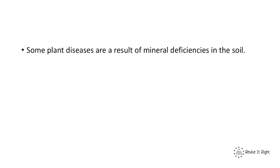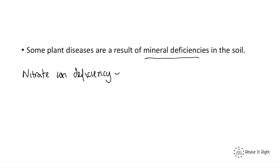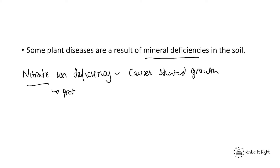Some plant diseases are also a result of mineral ion deficiencies in the soil that surrounds the plant. The first one is a nitrate ion deficiency — this is when the plant does not get enough nitrate ions. Nitrate ions are needed to make protein and therefore are important for growth. So a lack of nitrate ions causes stunted growth.